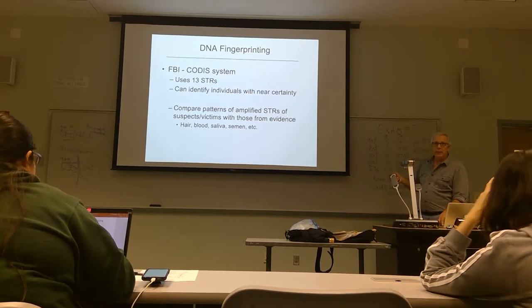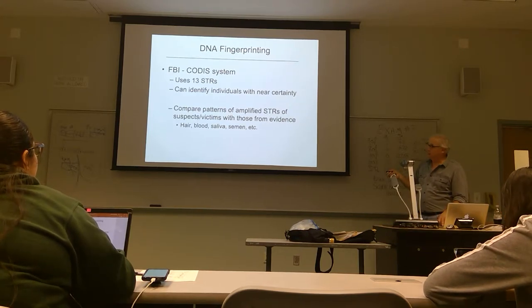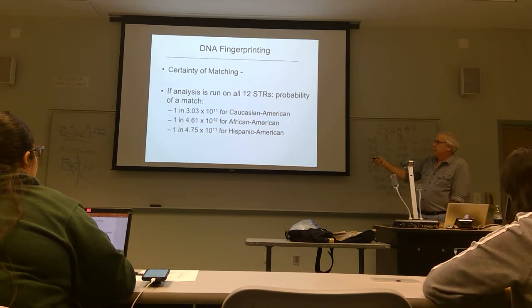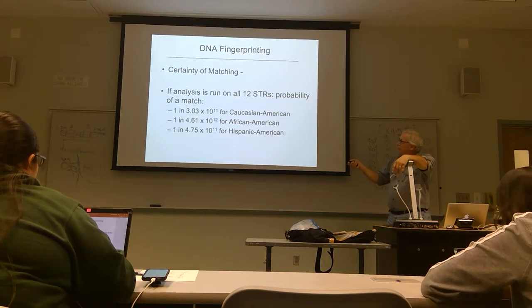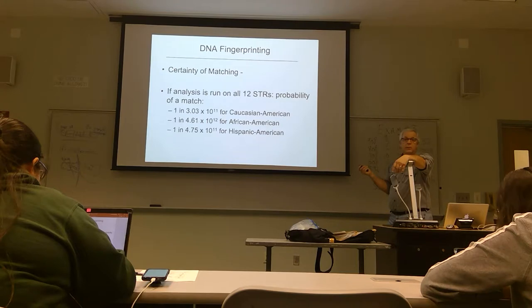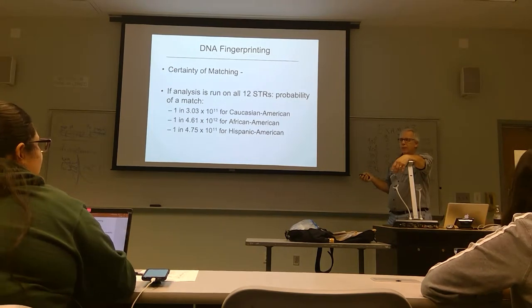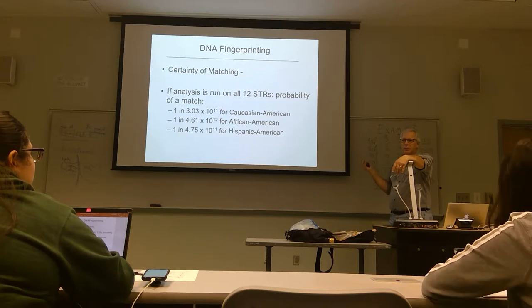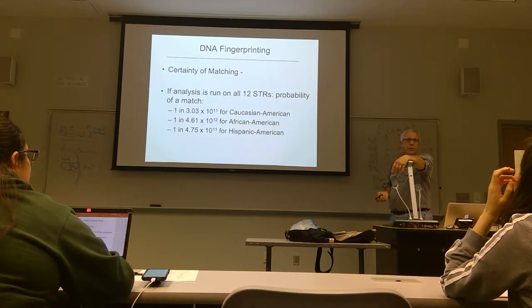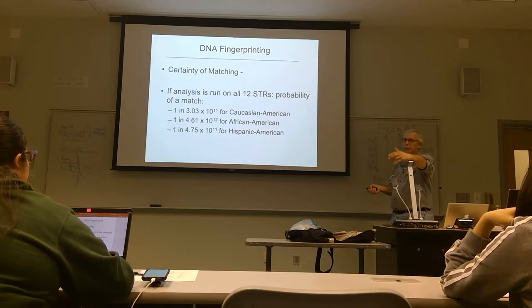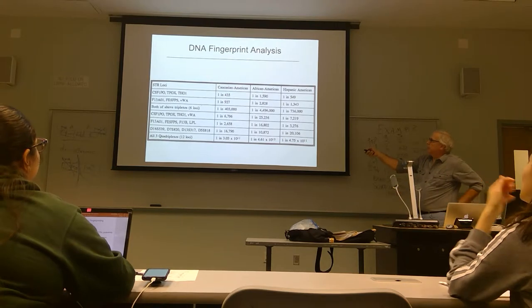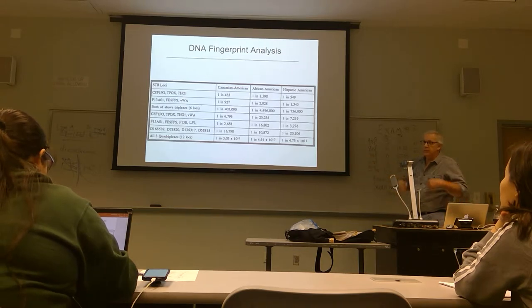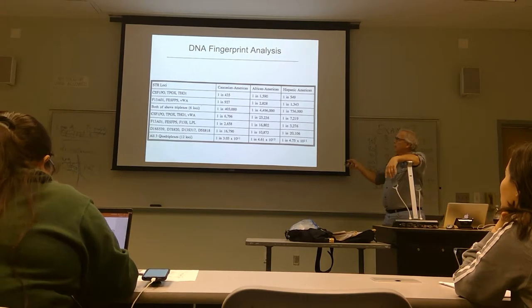Anything that leaves DNA behind — hair, blood, saliva, semen, any biological material — there'll be DNA there. If you run all 12, the odds are one in three times ten to the eleventh for Caucasian Americans. With 7.5 billion people on the planet — that's about ten to the nine — theoretically you can identify people with certainty. In some cases you may not run all 12; you run sets in increasing numbers as you try to specifically identify someone. If you just run three loci, for Caucasian Americans it's one in 435 — that's not going to work. Even one in 16,000 isn't enough; you need six loci for one in 400,000, and you probably still need all of them.